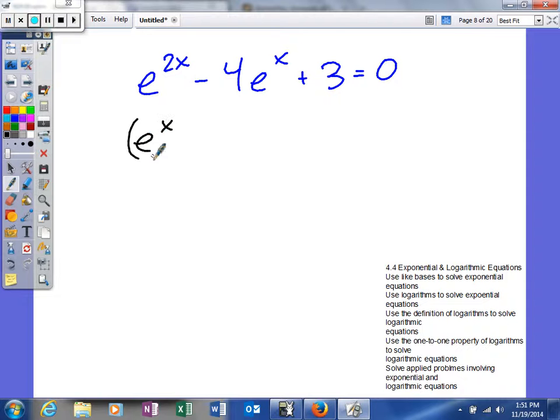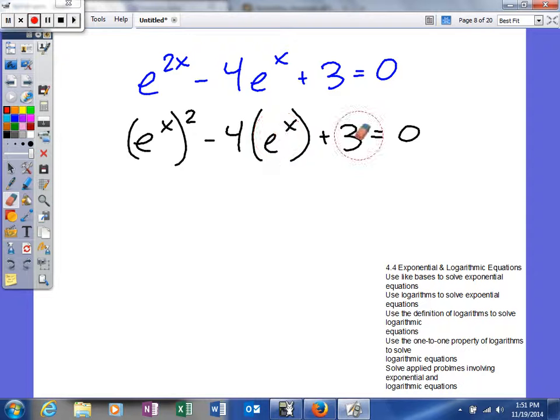So I'll say e to the x squared minus 4e to the x plus 3. So what we're basically looking at is, if we kind of said... Let me make my eraser bigger. If I said this to the second power and this to the first power and then this right here is just a constant, then that makes it look real quadratic.